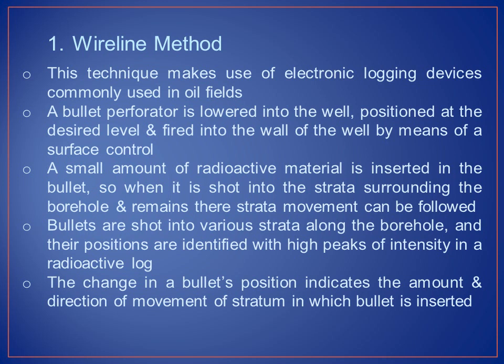The wireline method makes use of electronic logging devices commonly used in oil fields. A bullet perforator is lowered into the well, positioned at the desired level, and fired into the wall of the well by means of a surface control. A small amount of radioactive material is inserted in the bullet so that when it is shot into the surrounding strata and remains there, strata movement can be followed. Bullets are shot into various strata along the borehole, and their positions are identified with high peaks of intensity in a radioactive log. The change in a bullet's position indicates the amount and direction of movement of the strata in which the bullet is inserted.